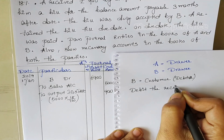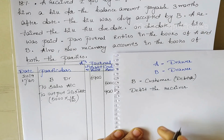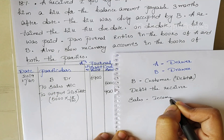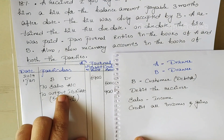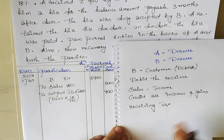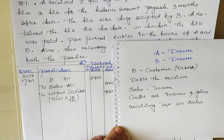B is our customer or debtor. Since B is the receiver we are debiting B's account — debtors are our assets, and whenever assets increase we need to debit it. Sales is an income or revenue; as per the nominal account rule we need to credit all incomes and gains. Then we have IGST on sales — that is, we are receiving tax on sales. Tax on sales is output GST, which is a liability for the seller. Whenever liability increases we need to credit it.